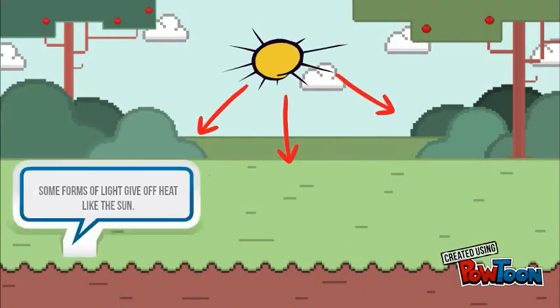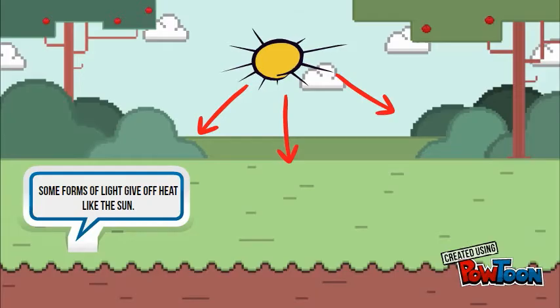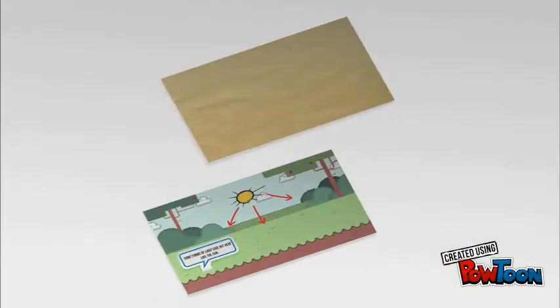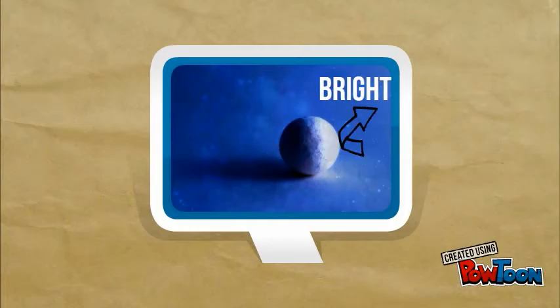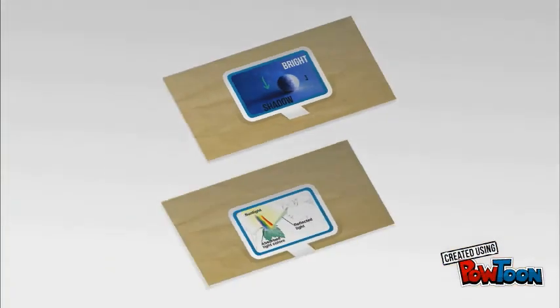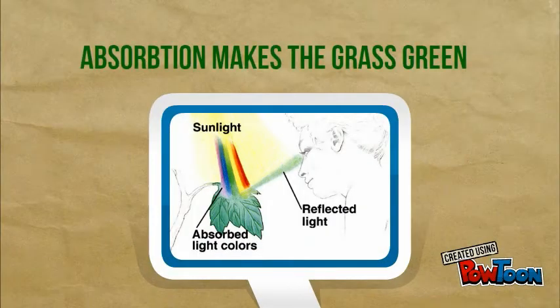Light moves in a straight line in all directions. Some light puts off heat, like the sun. Objects that block the light and reflect it back will be bright on one side and have a shadow on the other. Absorption makes the grass green — sunlight has all the colors, and the leaf absorbs all the colors but green and reflects the green light back at us. So that's what we see.